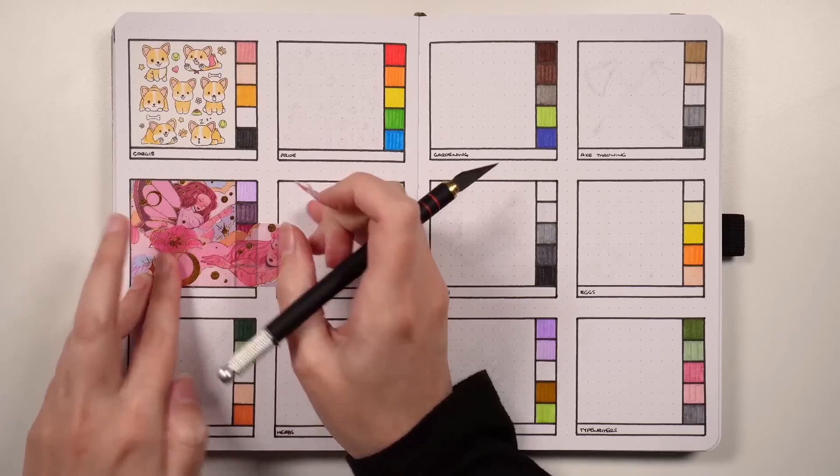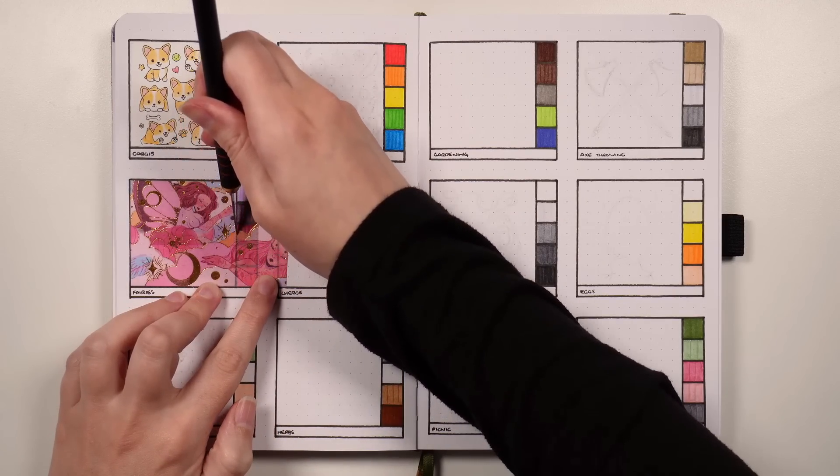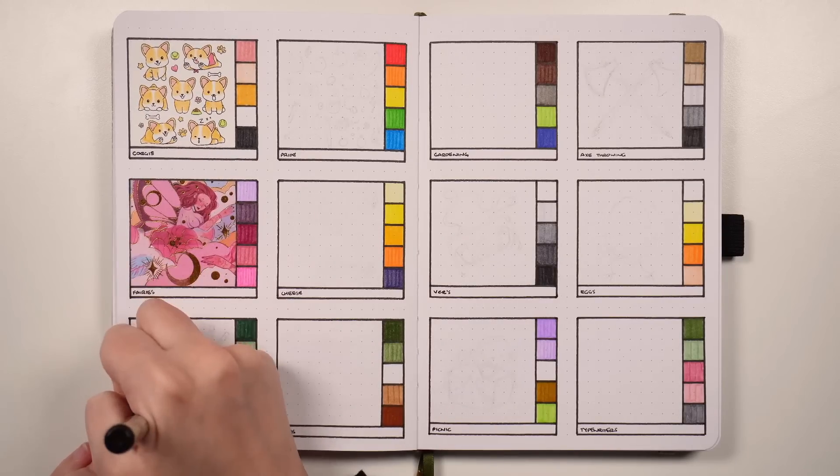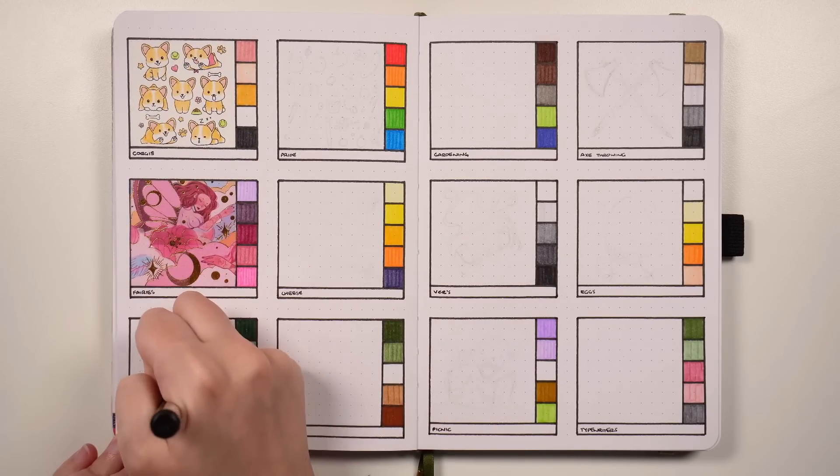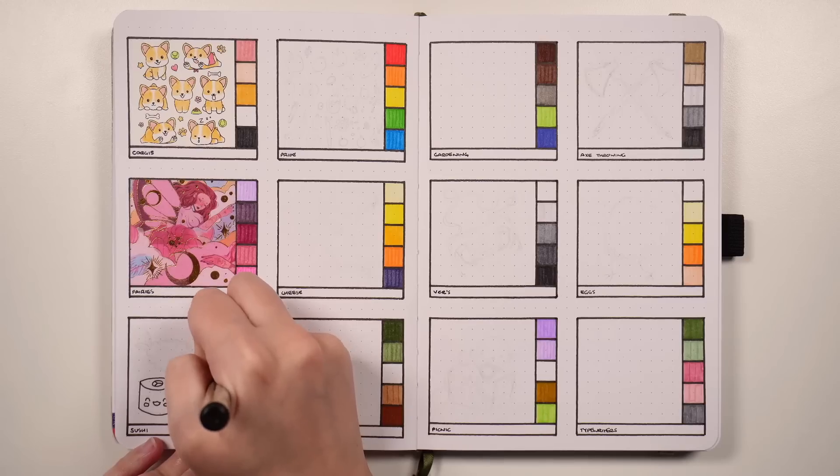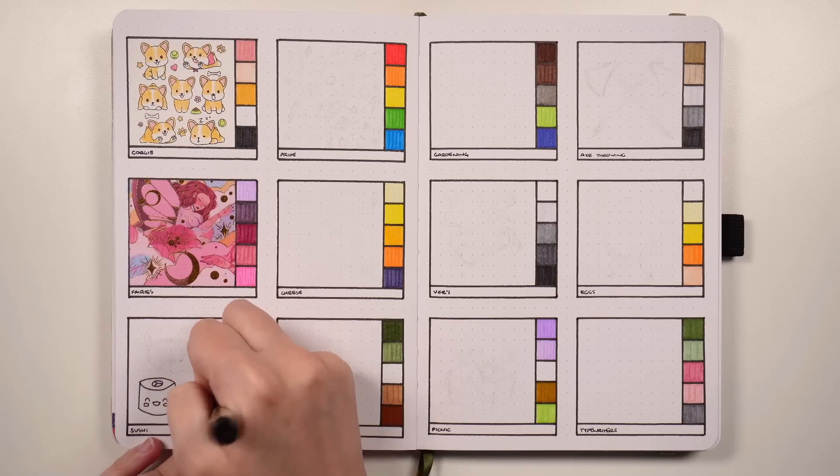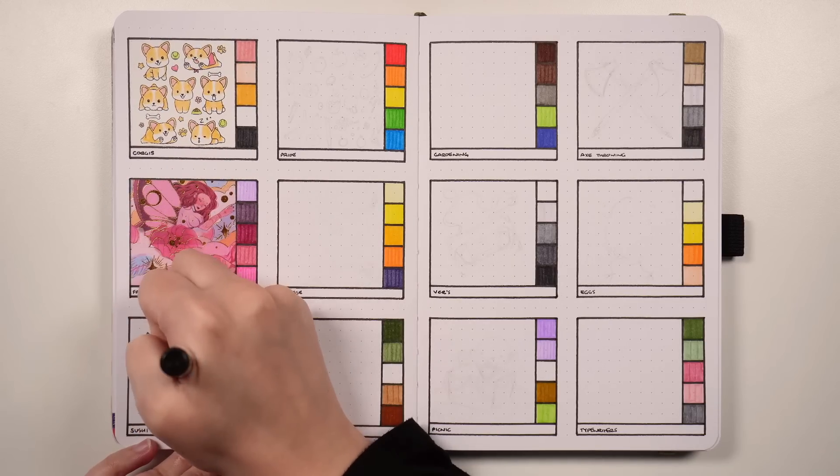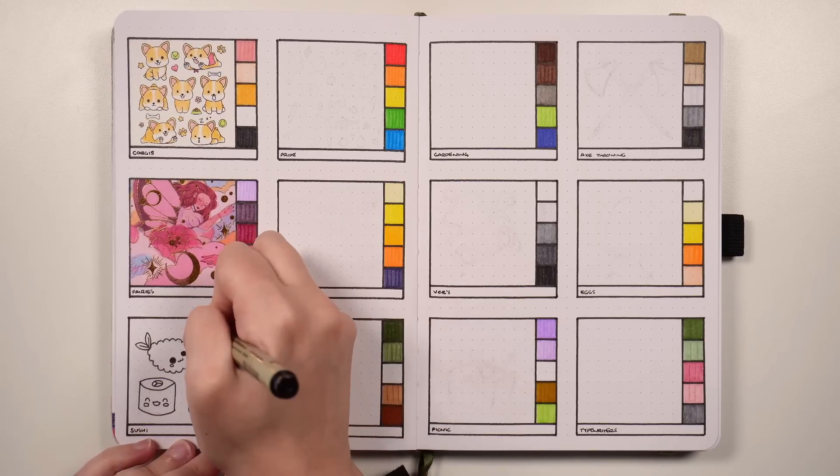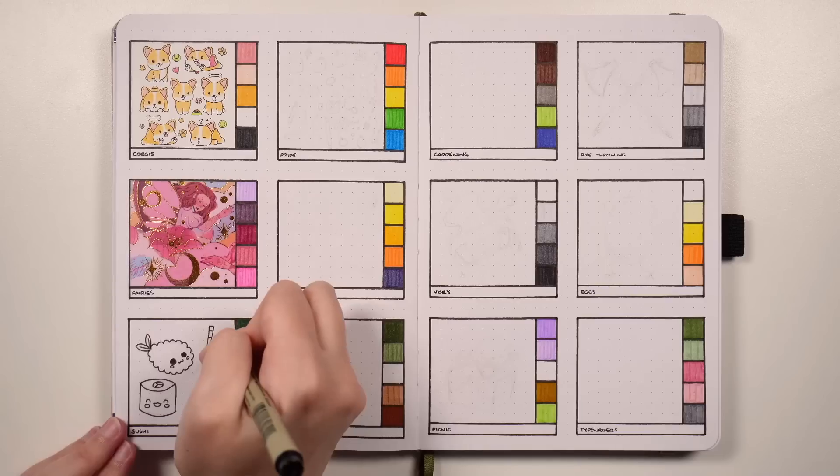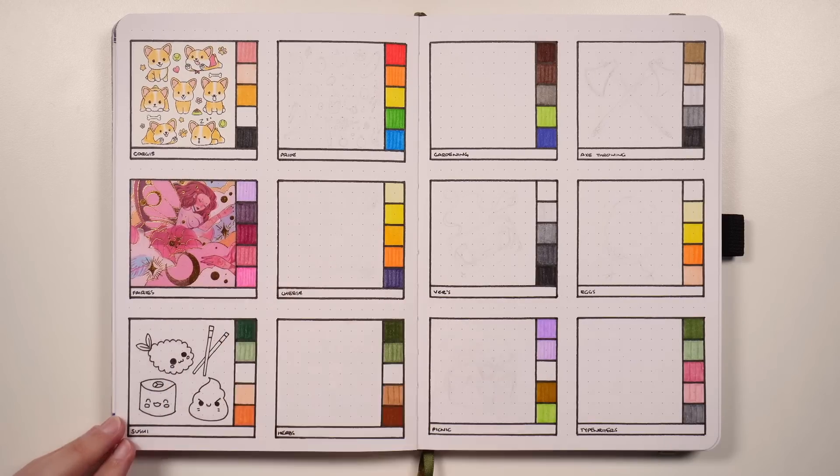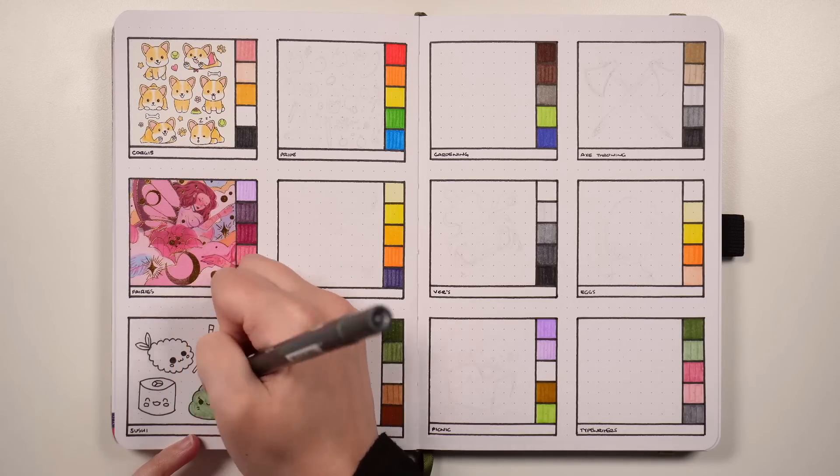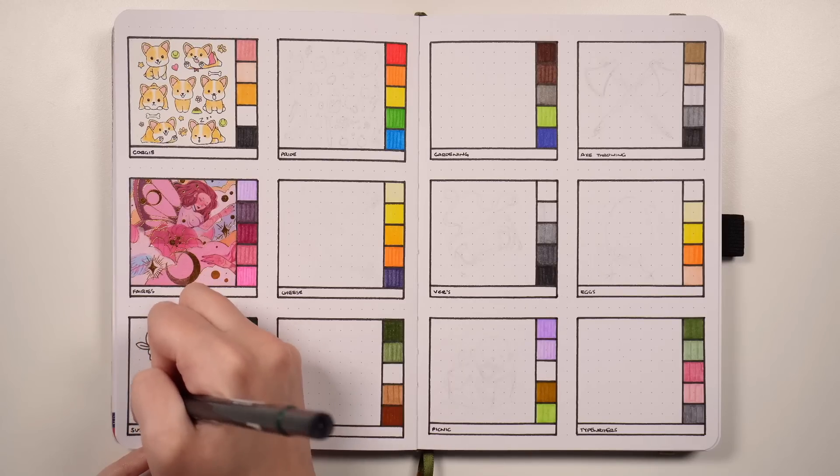Our next theme is related to a celebration that happens on June 18th, and is very much a theme that I would like to do in my journal one day. And that is a sushi theme, as related to International Sushi Day. I've seen people do sushi themes in their bullet journals before, and they always look so cute. You don't have to put the little kawaii faces on them, but I always think that they look sweet that way. You can stick with just the regular kind of maki, which is the one with the seaweed around the outside, the little roll.